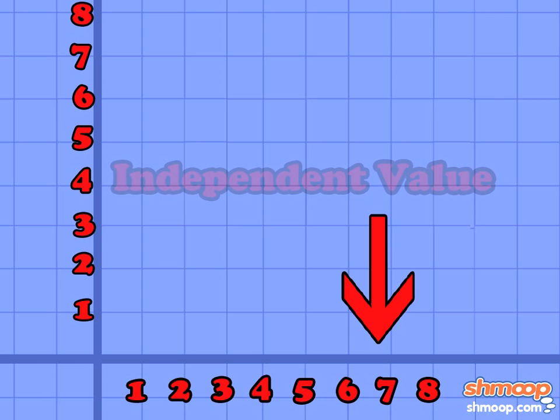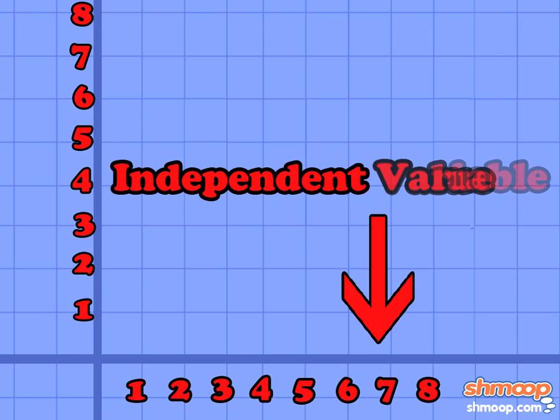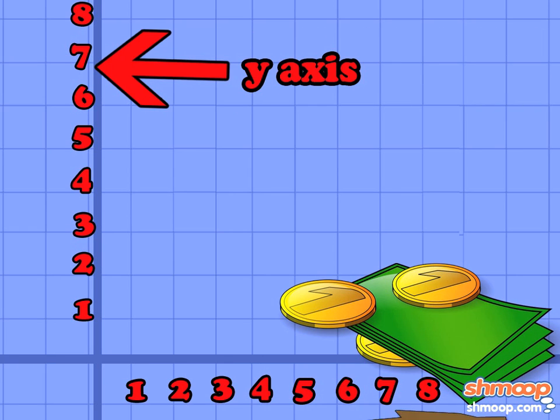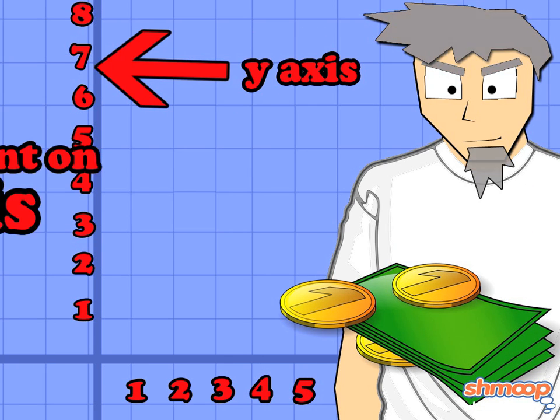Time is going to pass no matter what, making it an independent value or variable. Which makes money our y-axis because it is dependent on the time passed.